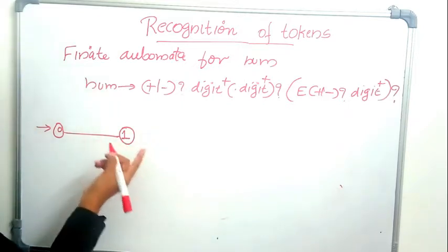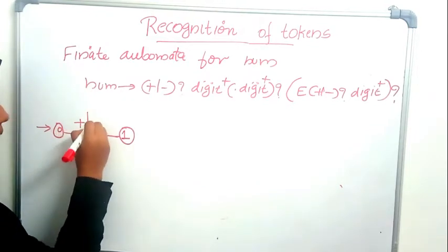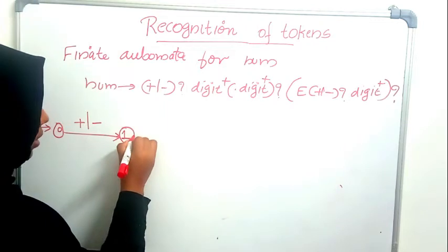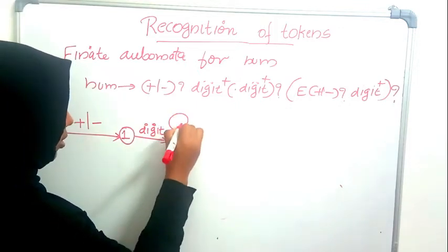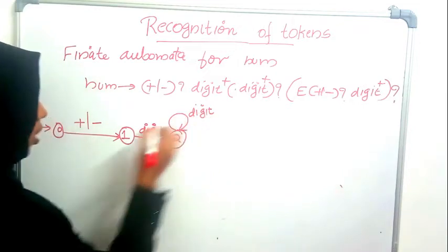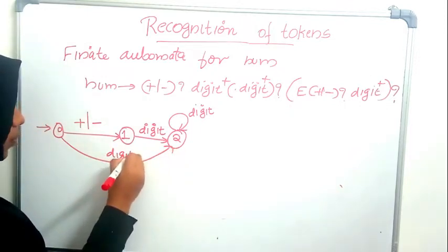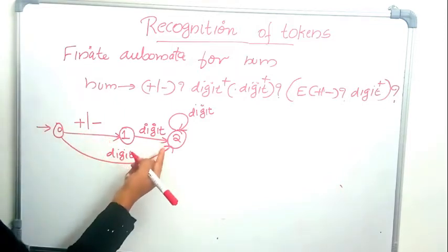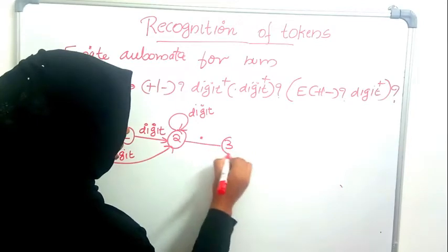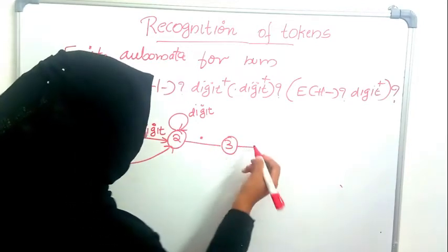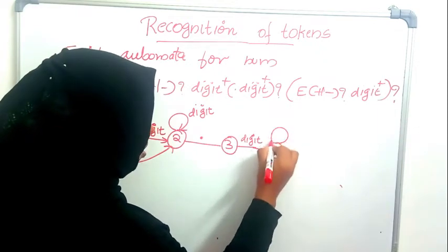If there is a plus or minus we go to state one, then we expect a digit. Any number of additional digits is fine. Even if there is no plus or minus, we skip directly to state two. From state two we may have a decimal point, going to state three, after which we must have at least one digit, and any number of digits may follow.